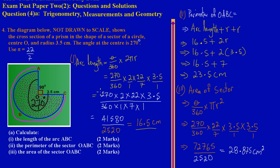In the previous video we looked at the solution to part 4A of the CSEC math exam paper May 2012. In part 1 we calculated the length of the arc ABC.